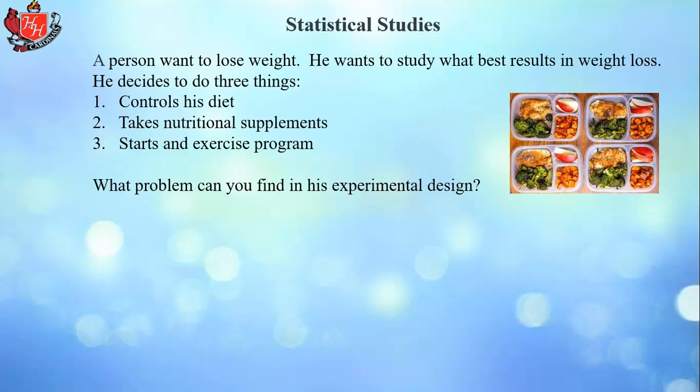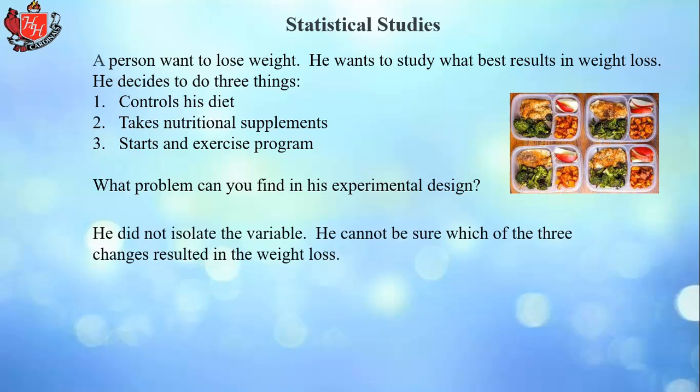A person wants to study what best results in weight loss. He decides to control his diet, take nutritional supplements, and start an exercise program. What's the problem with this experimental design? The problem is that he did not isolate the variable. He can't be sure which of the three changes resulted in the weight loss — it may have been entirely due to diet and had nothing to do with supplements or exercise. You've got to isolate one thing, study that, and keep everything else constant.